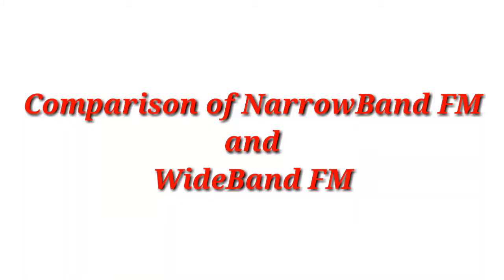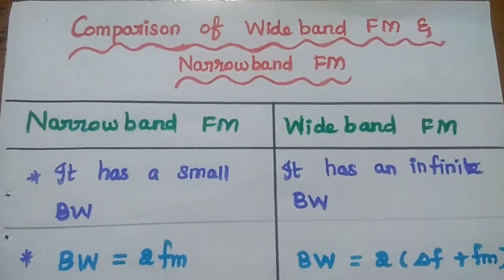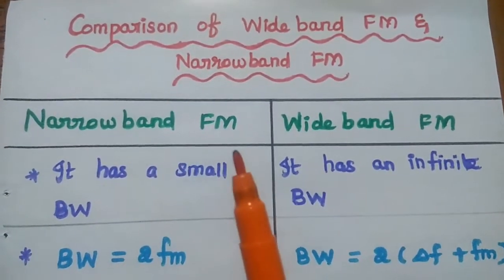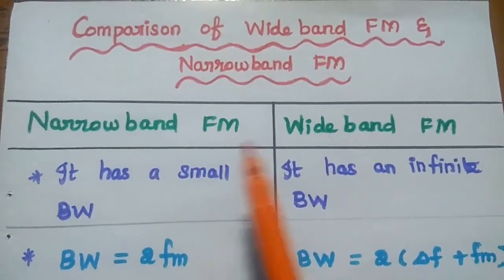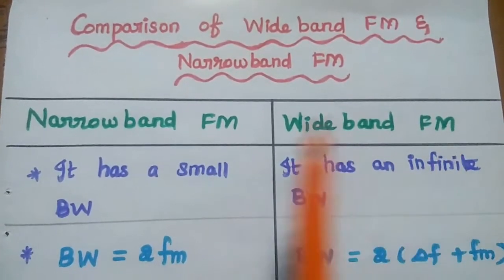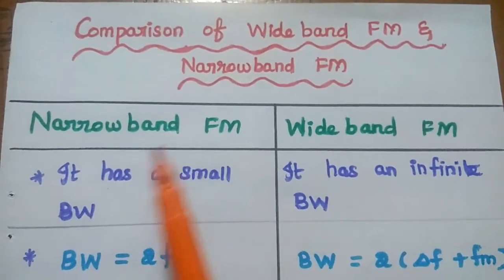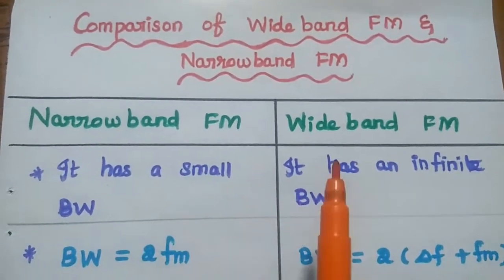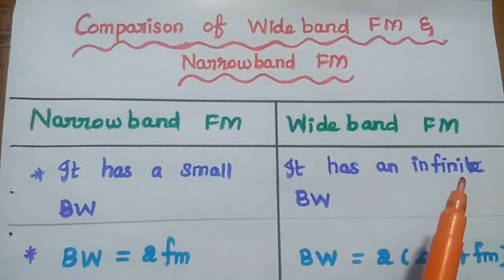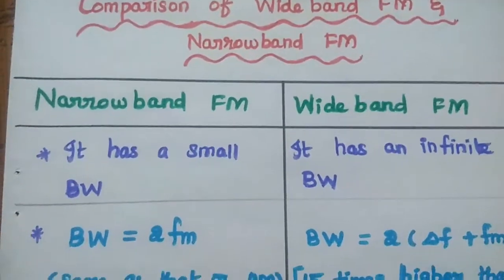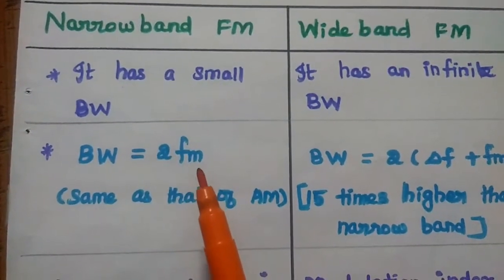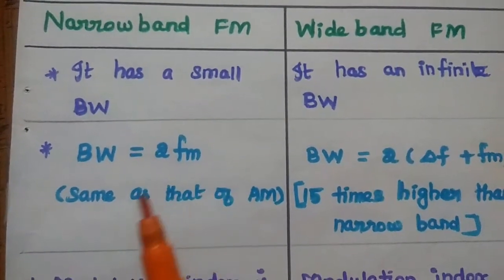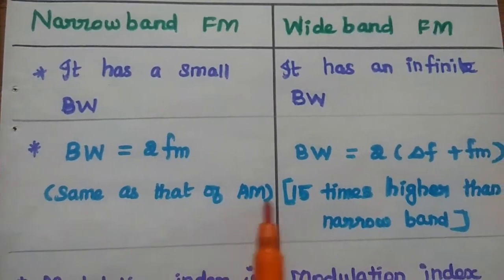Dear students, now we are going to discuss comparison of narrowband FM and wideband FM. Depending on the bandwidth of the frequency modulation, it can be classified into narrowband FM and wideband FM. As the name suggests, narrowband FM has a small bandwidth. In wideband FM, it has an infinite bandwidth range. The bandwidth of narrowband FM is 2 times the modulating frequency, which is the same as that of amplitude modulation.